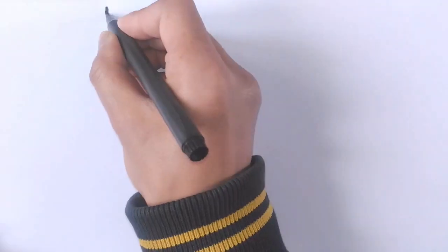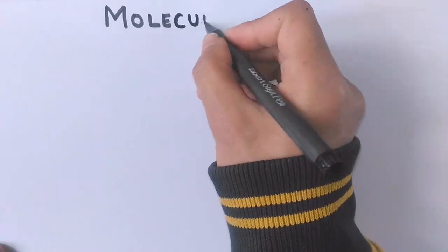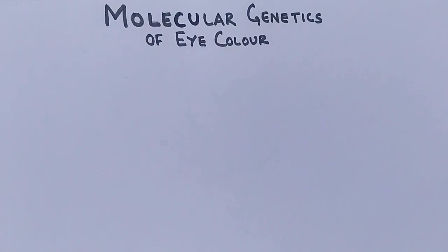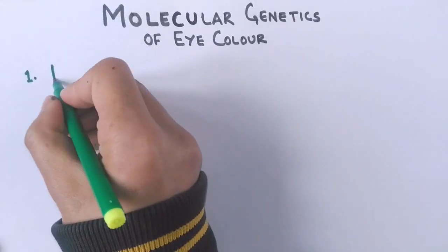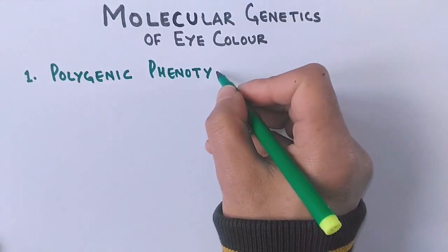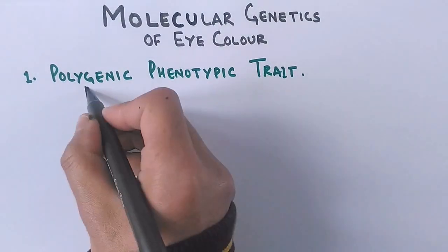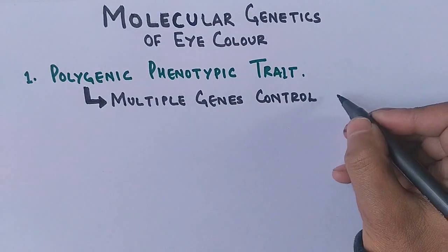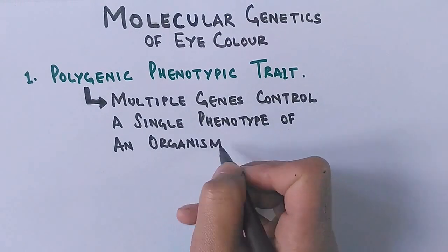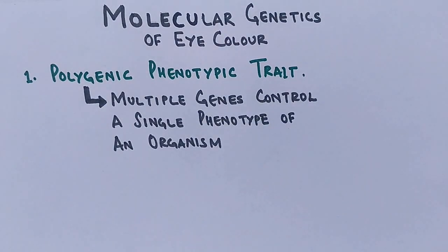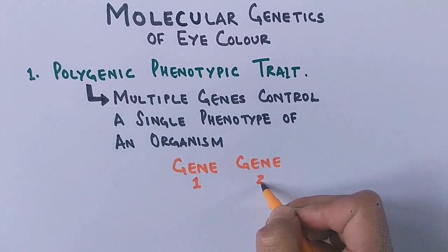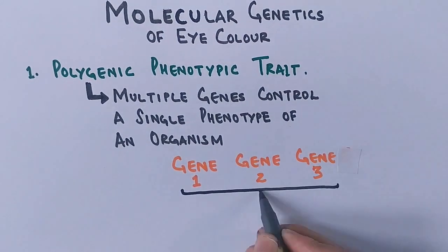In this video we will be discussing the molecular genetics of eye color, where we will see the genes responsible for eye color. First of all, eye color is a polygenic phenotypic trait, meaning multiple genes control a single phenotype of an organism. Many genes control eye color, such as gene 1, gene 2, and gene 3 — all contributing to eye color.